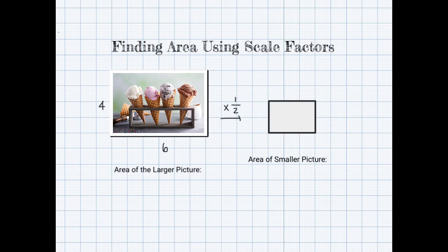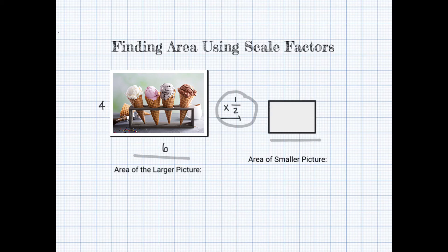Now that we're able to find perimeter and missing sides using scale factors, we also want to find area using scale factors. Here I have two photo frames. I want to minimize this picture of an ice cream to display in my room. The scale factor is one-half, meaning this smaller picture frame is one-half the size of the larger one. Using the scale factor to find the missing sides: 4 divided by 2 is 2, and 6 divided by 2 is 3, giving us the dimensions of the smaller frame.